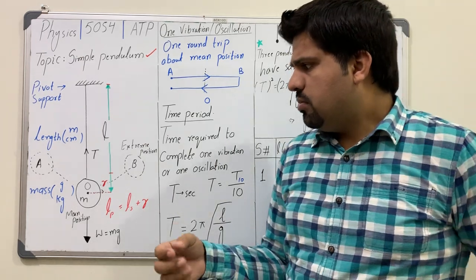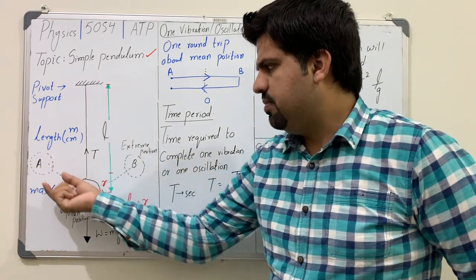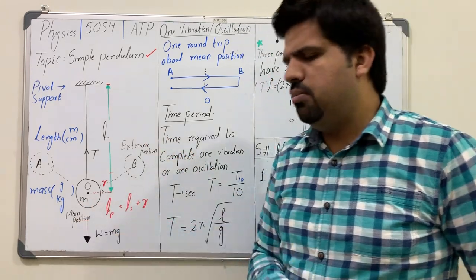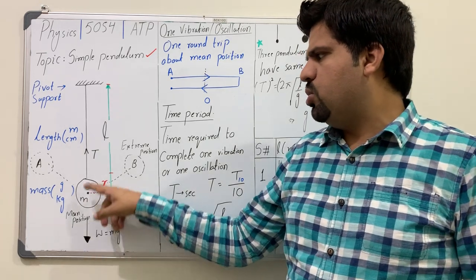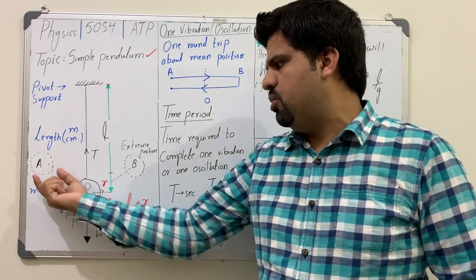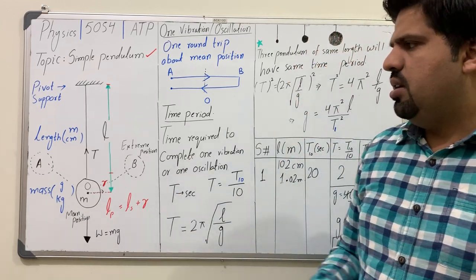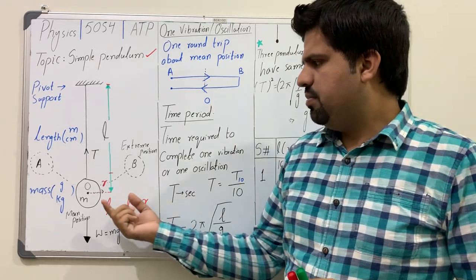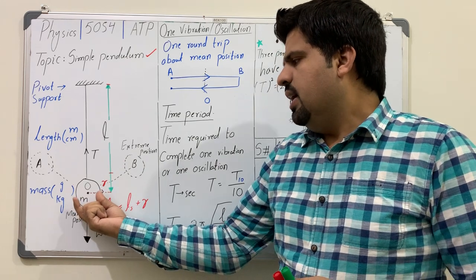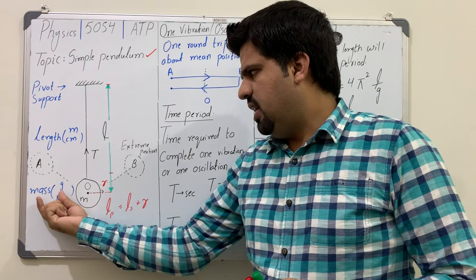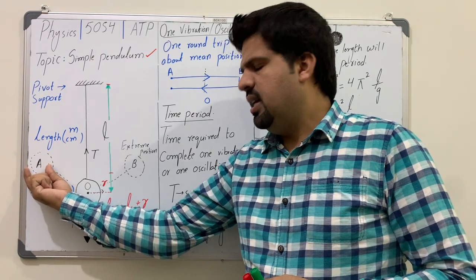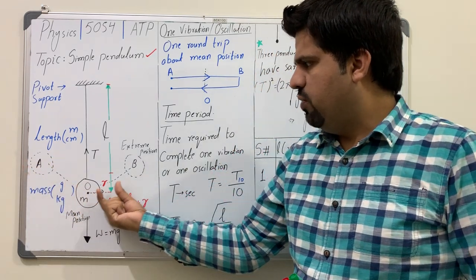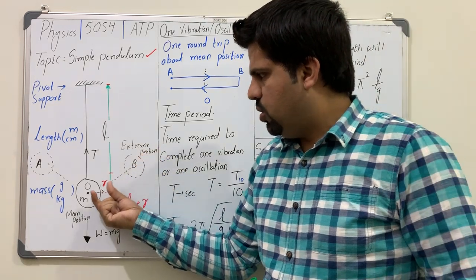A pendulum can oscillate from one point to another. The two extreme points are called the extreme positions, and the middle point is called the mean position. At mean position the pendulum experiences two forces: one upward and one downward. The two extreme positions are represented as A and B, and the center as O. A learner drags the pendulum to extreme position A, holds it for some seconds, then releases it.